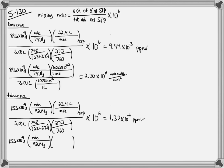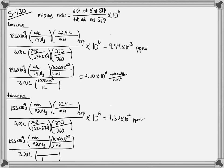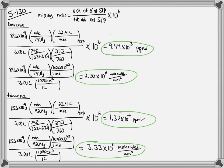To calculate the molecules of toluene present in a centimeter cubed, we take the mass of toluene in nanograms, convert it into moles by dividing by the molar mass, then multiply by Avogadro's number to get the molecules of toluene per the 3 liters, which we convert into centimeters cubed by multiplying by 1,000. This gives us 3.33 times 10 to the 11 molecules of toluene per centimeter cubed of the gaseous mixture.